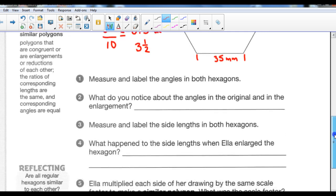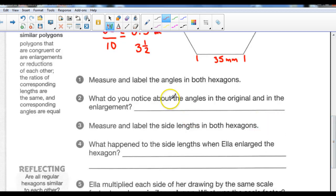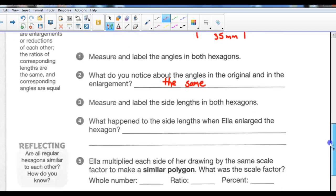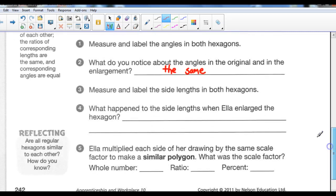So what do you notice about the angles in the original and the enlargement? Well, the angles are the same, because the angles don't change. They're the same shape. It's just that one is bigger than the other. So the angles are all the same. What happened to the side lengths when Ella enlarged the hexagon? Well, the side lengths, they got bigger. They increased. We can say they got bigger.